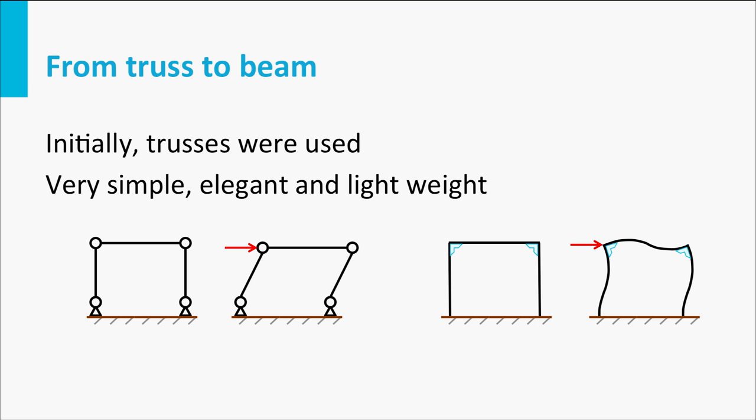If we replace the hinges by welded joints, we get rigid joints. If we now apply the same load, the truss is able to carry this load. However, the truss also deforms.